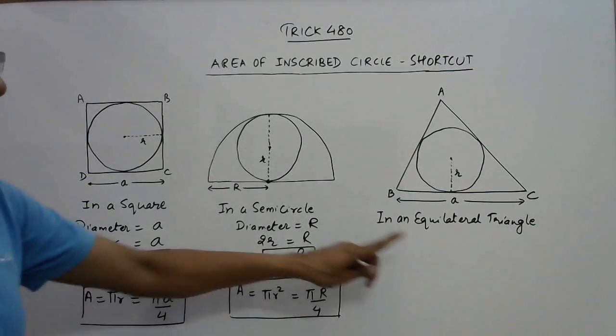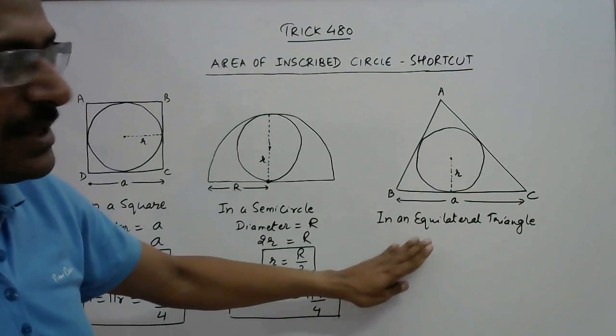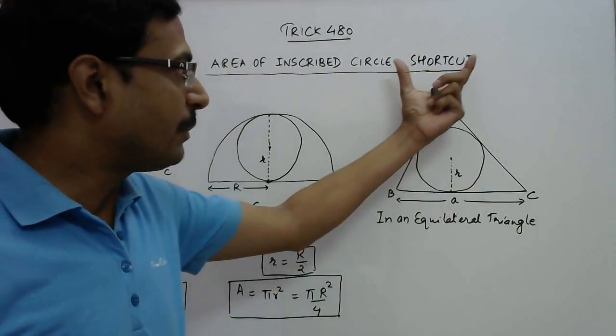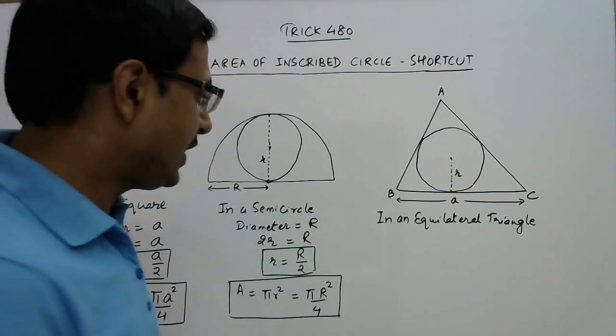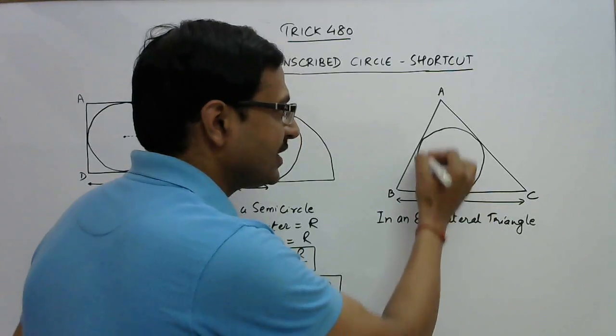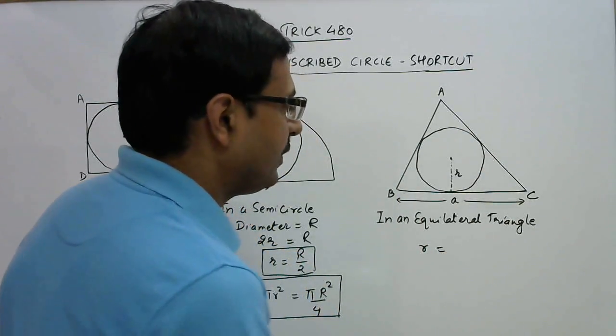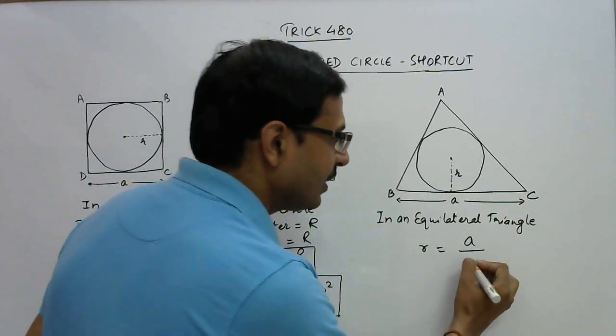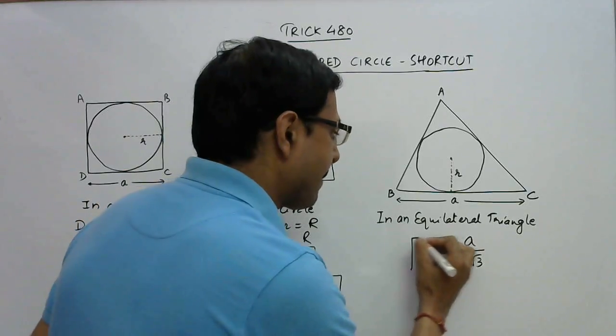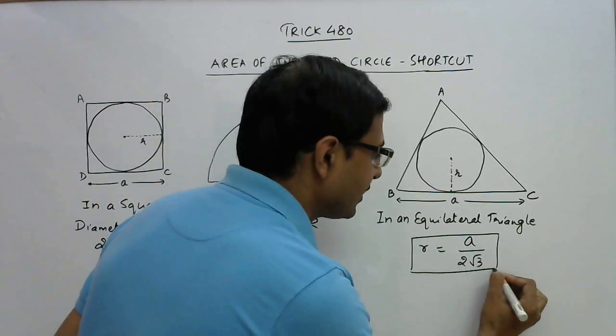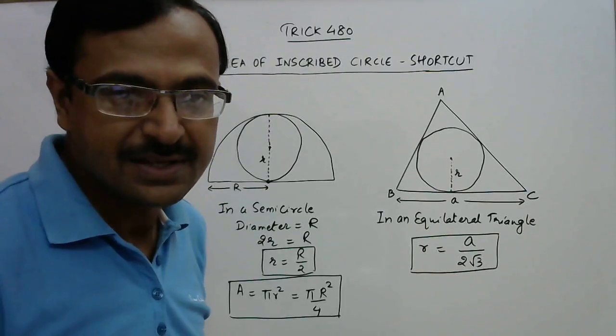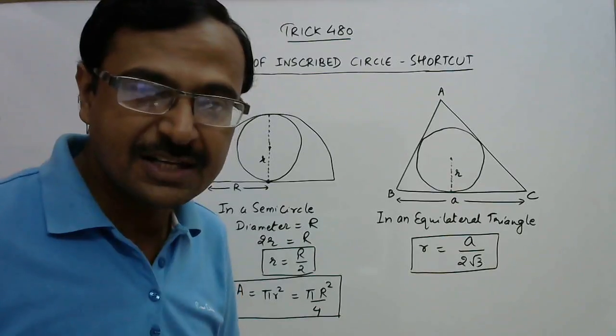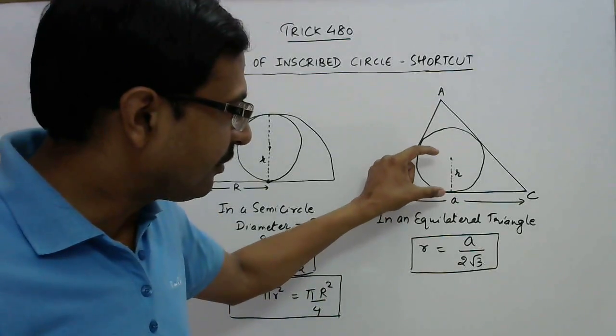Same thing we can apply for an equilateral triangle, but in this case the procedure is a little bit lengthy, so we can remember the shortcut directly. In this case, the radius of this inscribed circle r will be a upon 2√3, where a is the side of the equilateral triangle. Now if you can remember this, it will work out wonders in competitive exams because you would not be required to find the radius by traditional method.